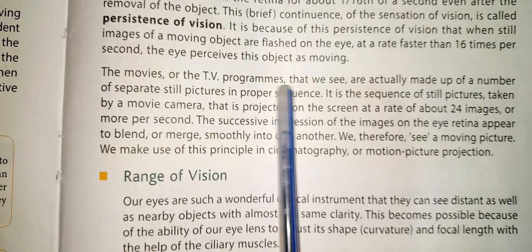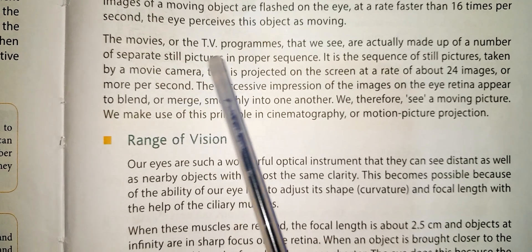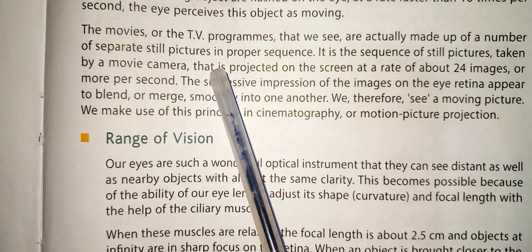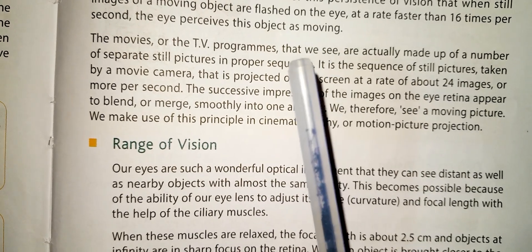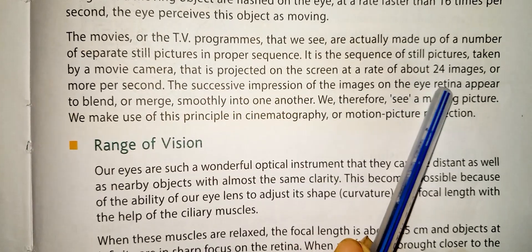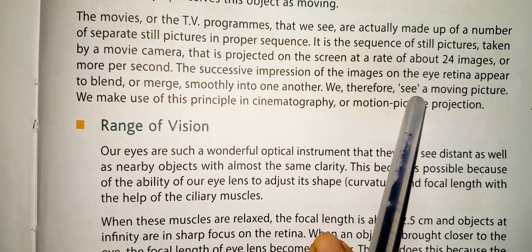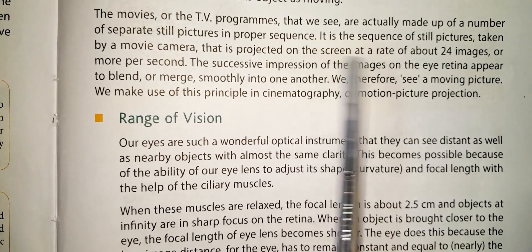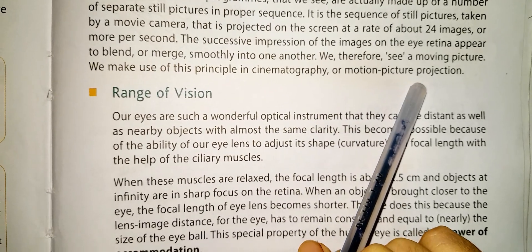When we watch movies or TV programs, what we see is actually made up of a number of separate still pictures in a proper sequence. This sequence of still pictures taken by a movie camera is projected on the screen at a rate of about 24 images or more per second. The successive impressions of the image on the retina appear to blend or merge smoothly into one another, and we therefore see a moving picture — this is the principle used in cinematography or motion picture projection.